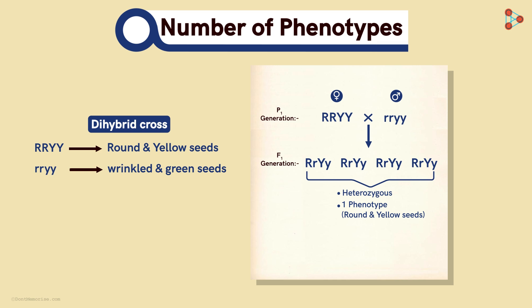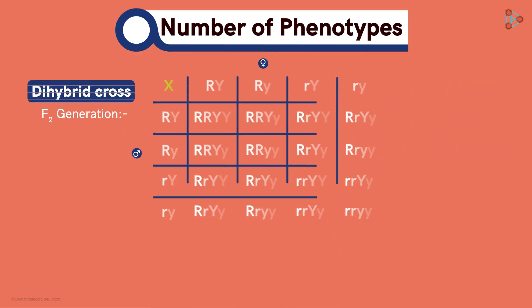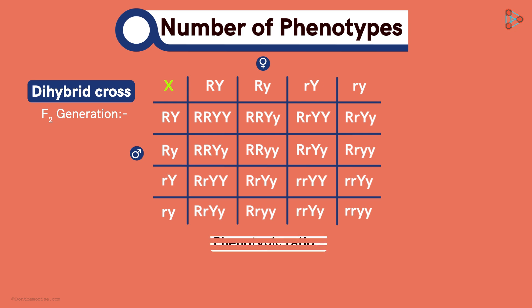What about the number of phenotypes in the F2 generation? If you remember the table of any dihybrid cross, we obtain the phenotypic ratio 9 to 3 to 3 to 1! Take a moment to go through this table that we had seen previously!